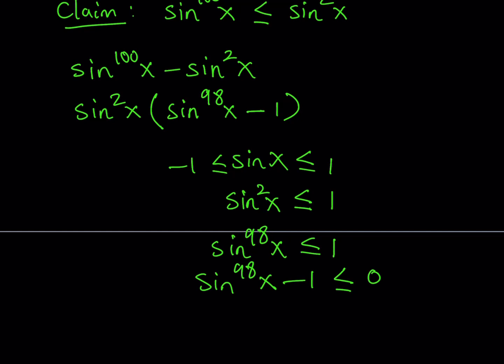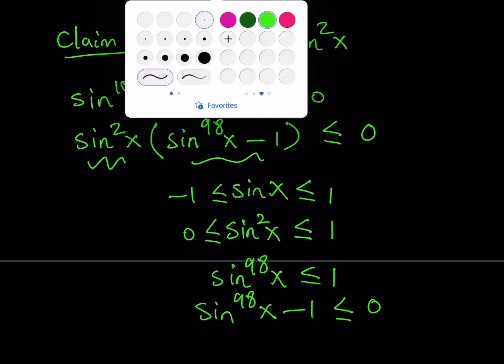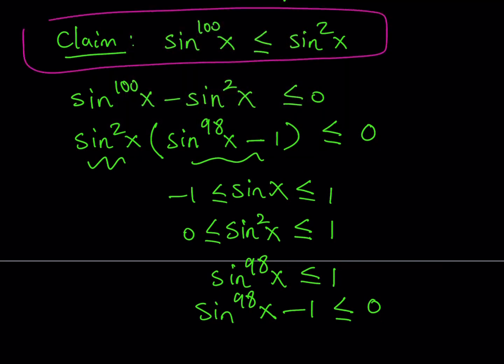What about sine squared x? Well, sine squared x needs to be greater than or equal to 0. So we're kind of like multiplying. Suppose at this point that sine x to the power 98th does not equal 1. So this would be negative, and this would be positive all the time. Their product needs to be negative, including 0. So basically, we can safely say that this product is less than or equal to 0, which proves our claim. So basically, we just proved it. This is a true statement.